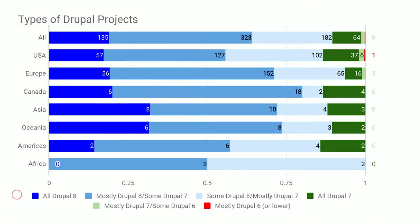One of the questions we asked was what kind of projects are you working on — Drupal 8, mostly Drupal 8, little 7, mostly 7, little 6. The most interesting result: the highest proportion of all-Drupal-8 projects is in Asia and Oceania. Within the US and Europe, about 80–90% is Drupal 8 solidly or mostly. That's great news because we've heard about the slow adoption rate of Drupal 8 — this data says that's not exactly true. There is still room for improvement, but the majority of time being spent is on Drupal 8. And you'll see that one outlier is the one developer still working on Drupal 6.